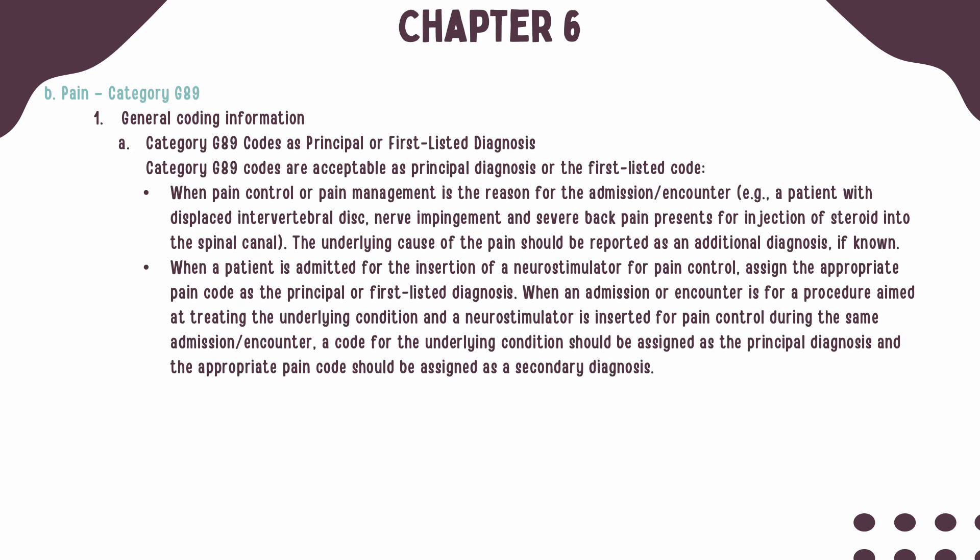There are two instances that allow for a code from Category G89 to be listed as primary or first-listed diagnosis. When pain control or pain management is the reason for the admission or encounter, the first-listed diagnosis will be G89, followed by the underlying cause of the pain, if known.